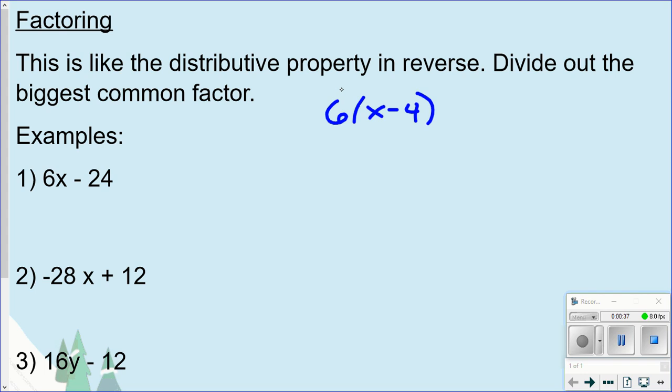To use the distributive property, you just distribute it inside the parentheses by multiplying. So you multiply 6 times x and get 6x, and you multiply 6 times 4 and get 24. I just bring down the minus sign, and so this and this are equivalent to each other.